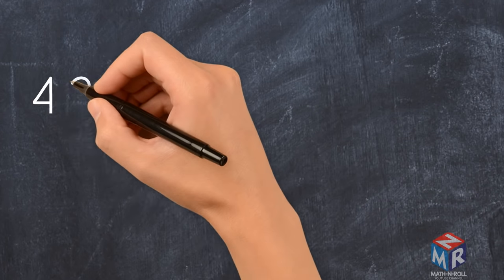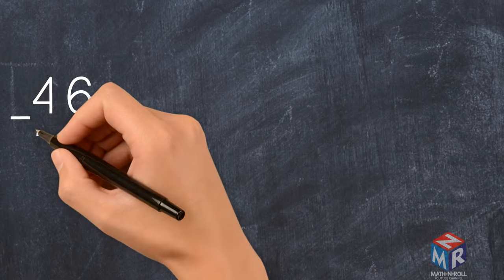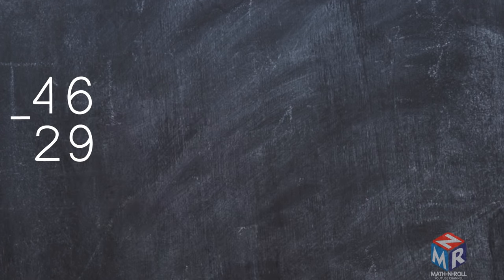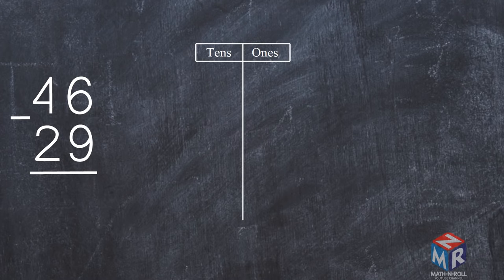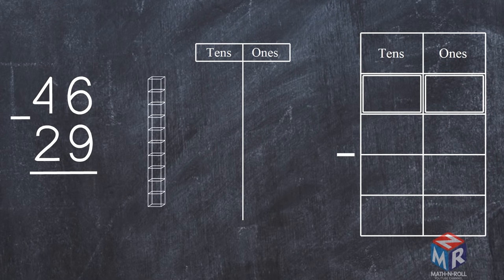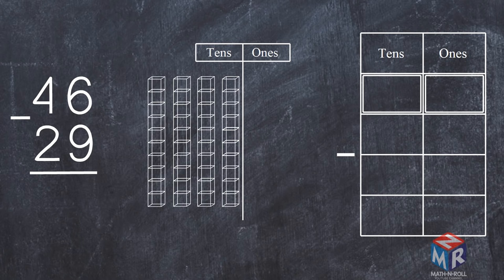Let's try another example. 46 minus 29. Let's draw 46. 46 has 4 tens and 6 ones.